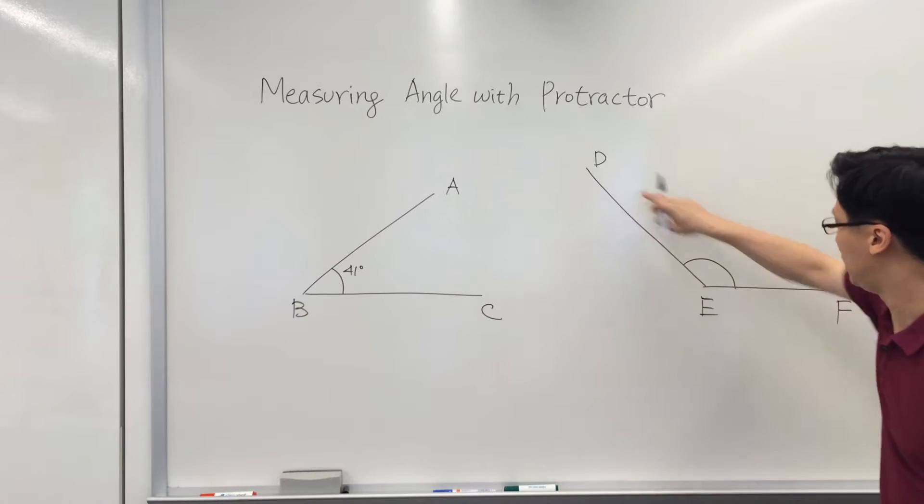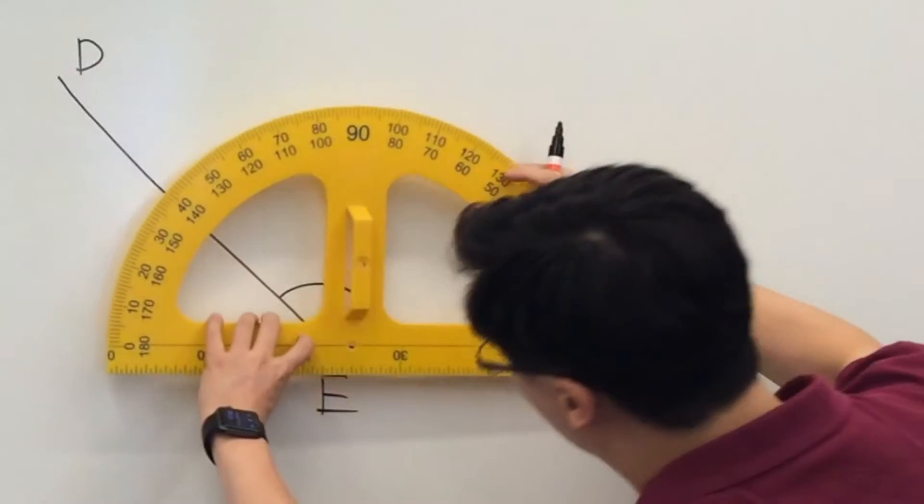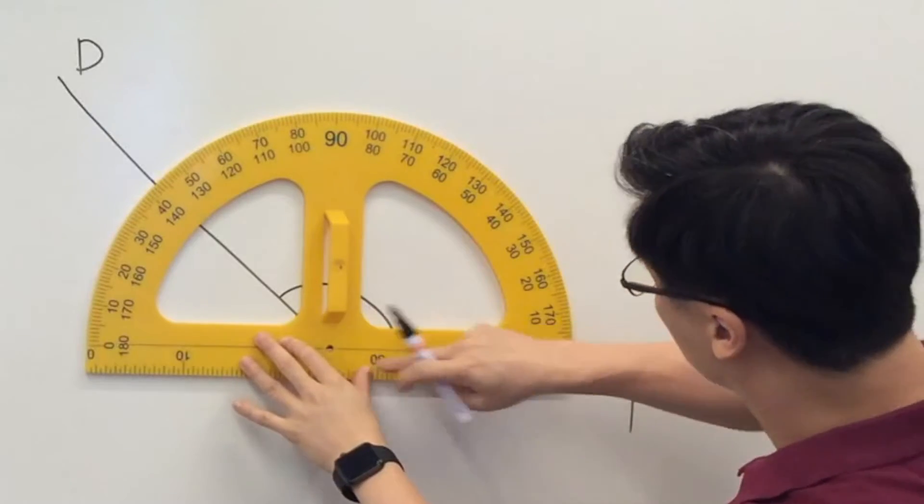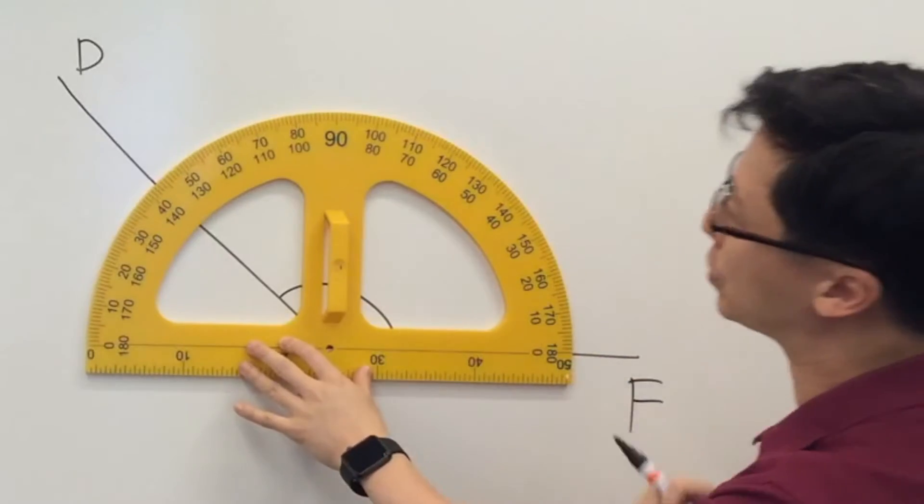For this one, E, F. Again, we can make use of the protractor. And we can align the protractor in this way so that it matches with the horizontal line.